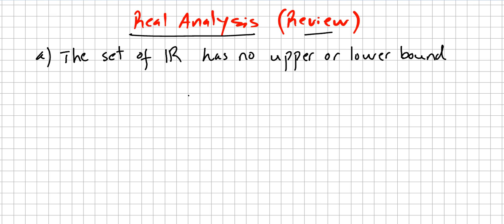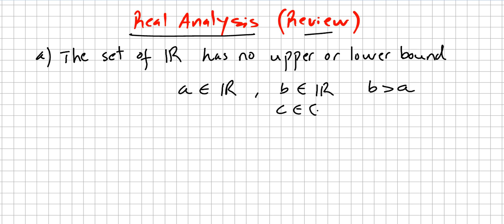The set of real numbers has no upper bound or lower bound. For any element A you get in the reals, you will always have some B in the reals where B is greater than A, or you will always have a C in the reals where C is smaller than A.